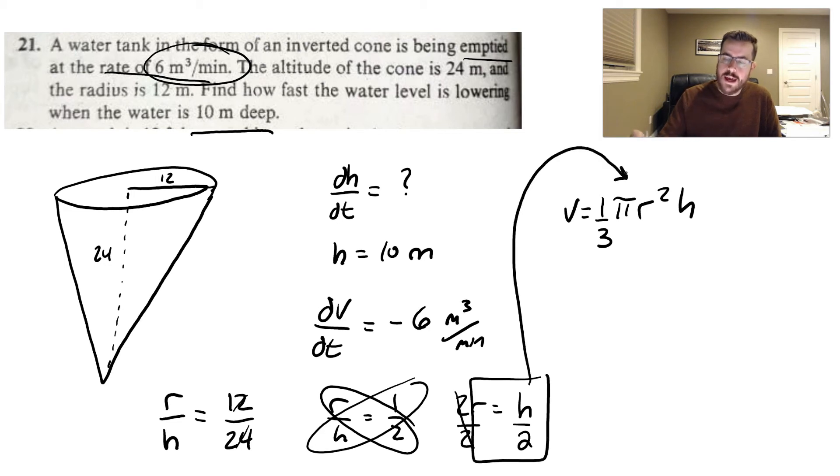So I'm going to take that and sub that into my r value up here. So you really get that the volume formula is (1/3)π and then (h/2)² times h.